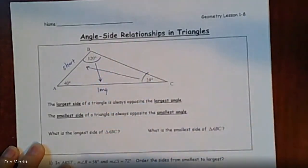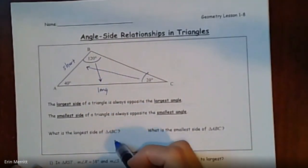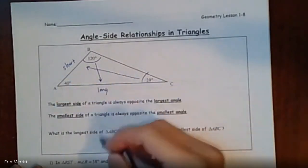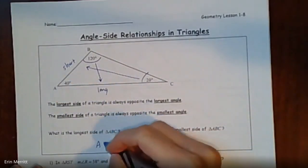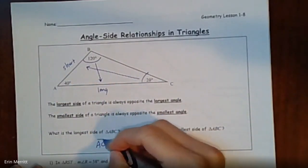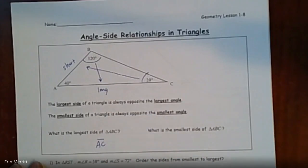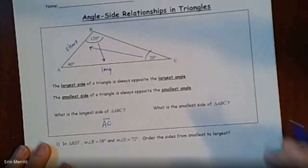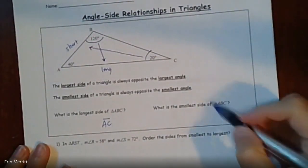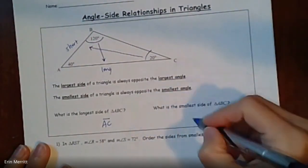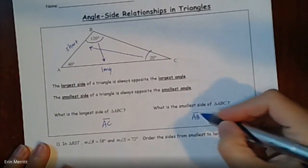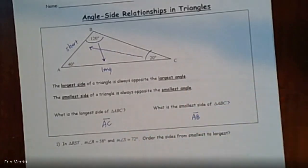So it asks: what is the longest side of triangle ABC? That would be side AC. And then what is the smallest side of triangle ABC? That's going to be side AB.